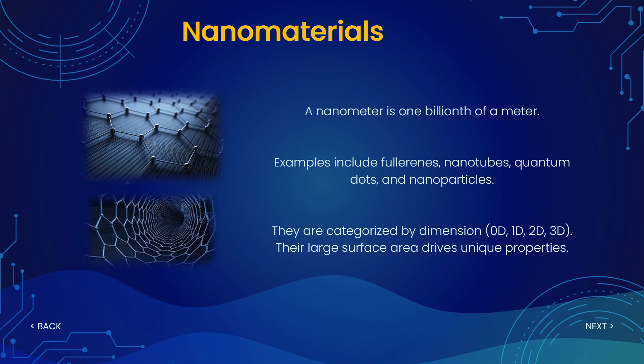Nanomaterials are divided into different categories based upon their dimensions. If all dimensions of a material are in the nanoscale, that is considered zero-dimensional. If one dimension is in the nanoscale, it is one-dimensional, and similarly there are two-dimensional and three-dimensional nanomaterials. For example, metal nanoparticles are zero-dimensional, whereas carbon nanotubes or conducting polymer nanowires are one-dimensional nanomaterials.